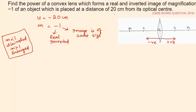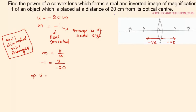We have to find the power of this convex lens. Before that let's find out the image distance, then we'll find out the focal length, and after that we'll find out the power. Using the magnification and object distance we can find the image distance using the magnification formula. Magnification M is given by v by u. Magnification is minus one, v we don't know, u is minus 20.